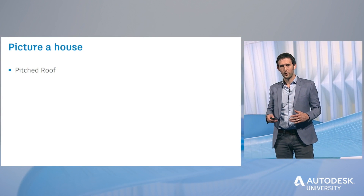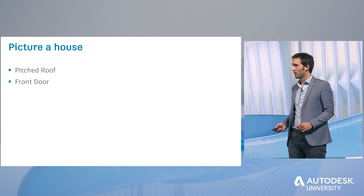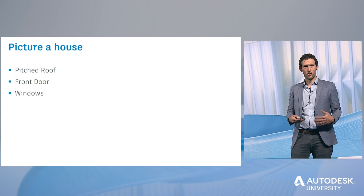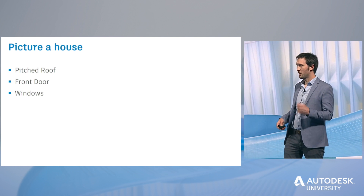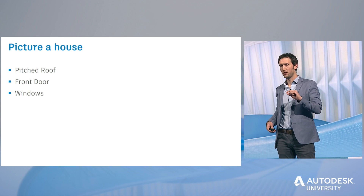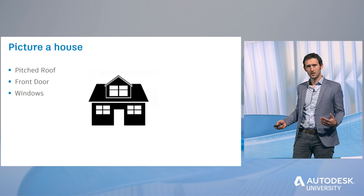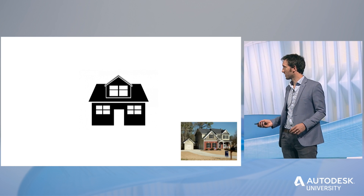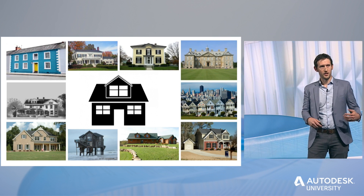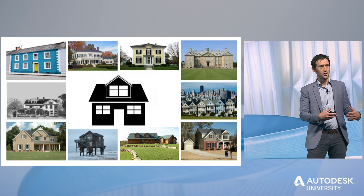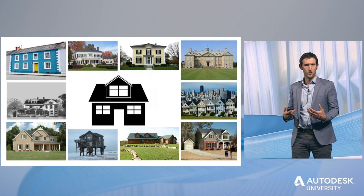I'd like to start out by having you all imagine something for me. I want you to picture a house — not just any house. It needs to have a pitched roof, a front door, and some windows. So from the limited information I've given you, the chances of me understanding what each of you is imagining is almost impossible, because each of you gets to interpret that information as you like.